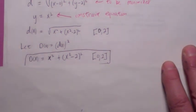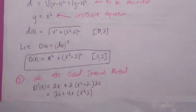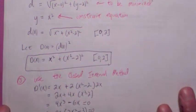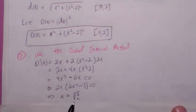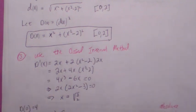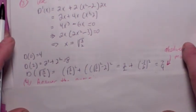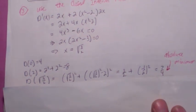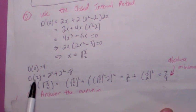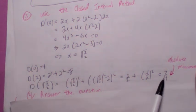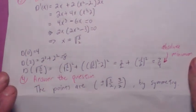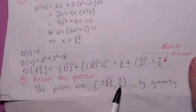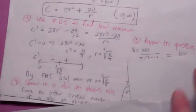By the closed interval method, I take the derivative, simplify, and set it equal to zero. You get x equals zero or plus or minus radical three over two. Since we're only in the first quadrant, the only critical number of interest is radical three over two. Then evaluate d at the left endpoint, right endpoint, and the critical number. The absolute minimum turns out to be at the critical number. The answer is that the closest points are plus or minus square root of three over two, and three halves — by symmetry, there's one in the second quadrant.